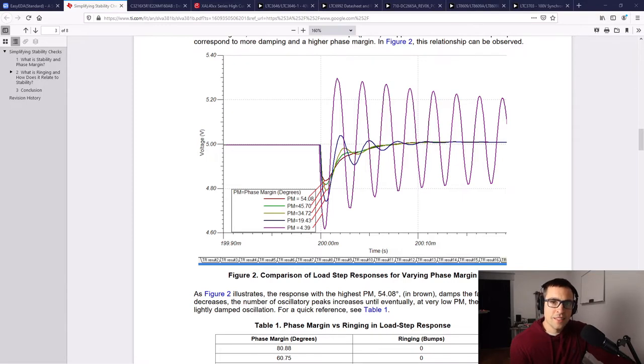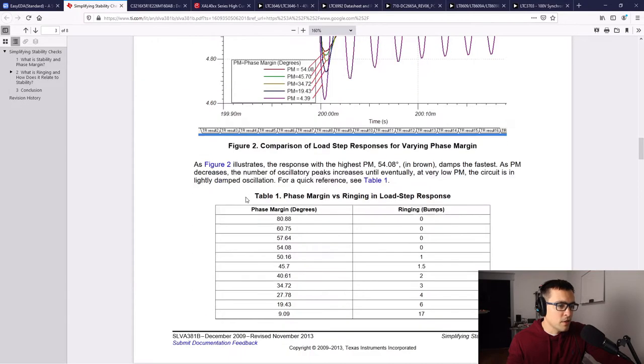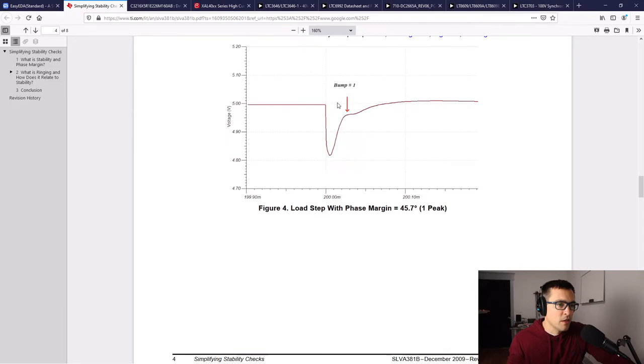Now that we've discussed the schematic for the test board, let's go over what we would like to see for our transient response. I've pulled up a document from Texas Instruments that shows the relationship between phase margin and ringing in the transient response. Most people will say at least 45 degrees of phase margin is what you want to be considered stable. The lower the phase margin, the more ringing you have. For phase margins above 54 degrees and above, there is no ringing at all in the transient response.